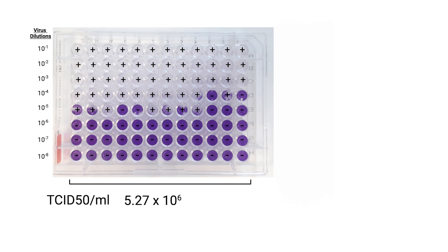If we're looking to convert a TCID-50 per milliliter titer into an infectious units per milliliter titer, we simply multiply the TCID-50 per milliliter value by 0.7. In our case, that would be 5.27 times 10 to the 6 multiplied by 0.7. This gives us 3.7 times 10 to the 6 infectious units per milliliter.